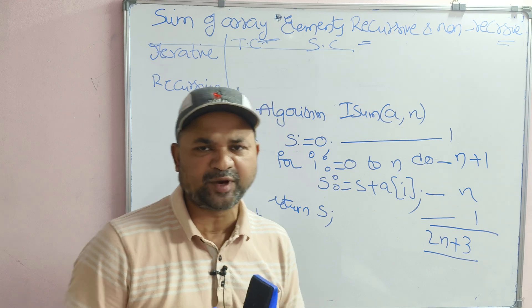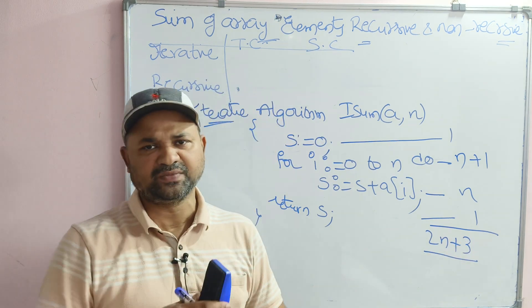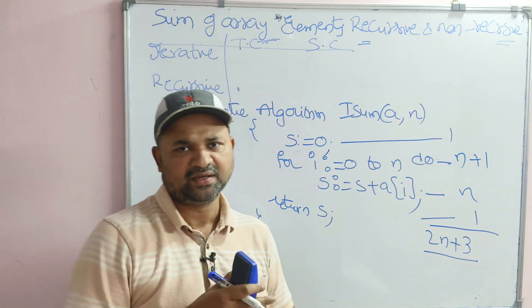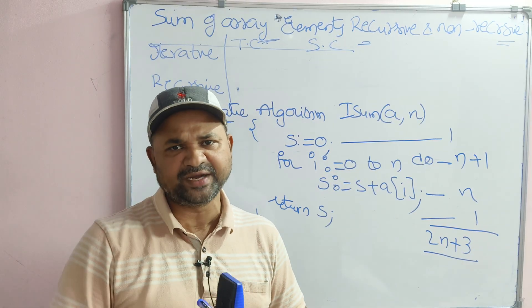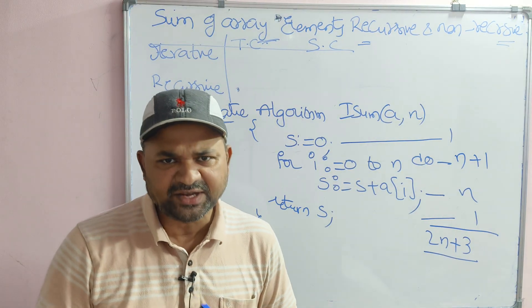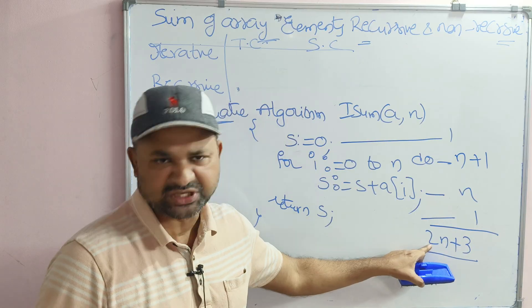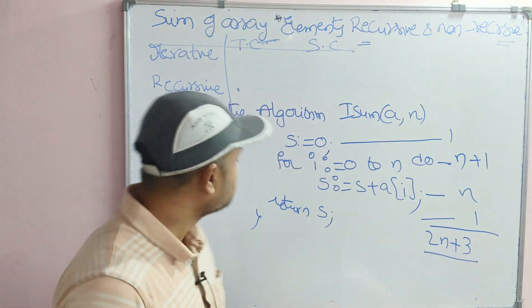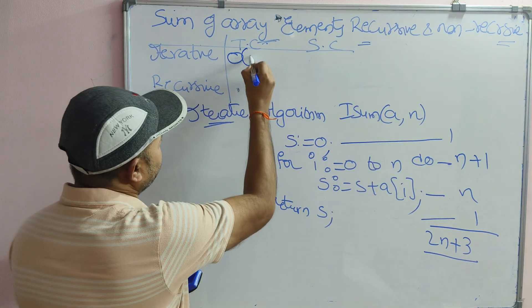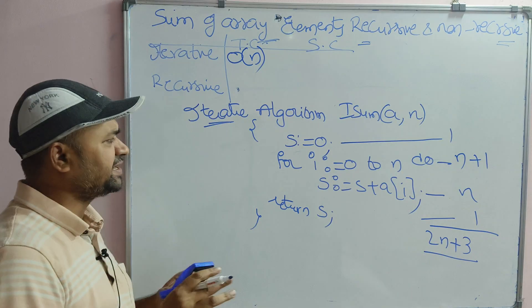Here, what is the higher order exponent? The constant 3 means 3 times N power 0, while 2N means 2 times N power 1. So 1 is the higher order exponent. While calculating time complexity, we ignore the constant multiplier. Therefore, the time complexity of the iterative algorithm is order of N — linear computing time.